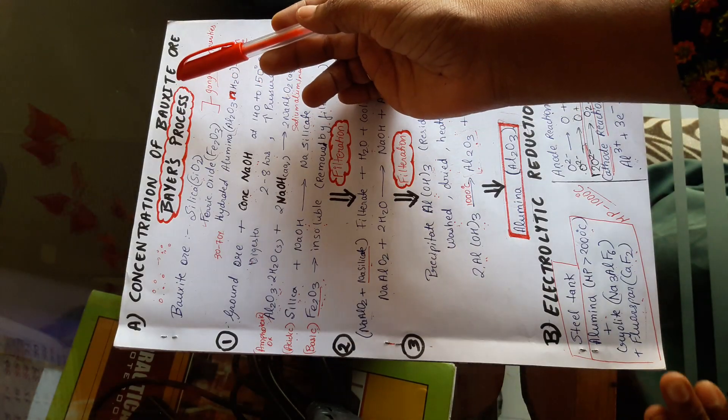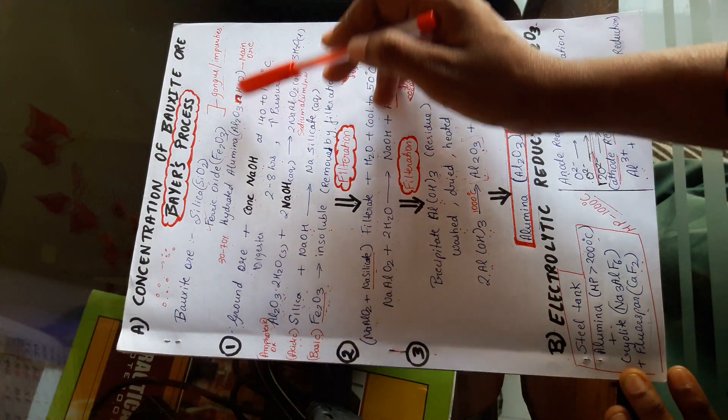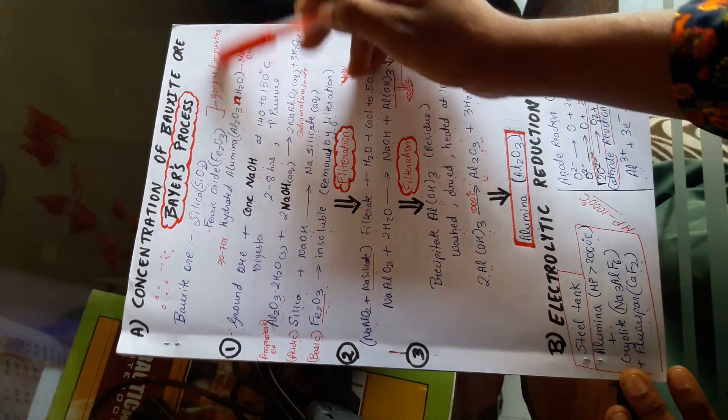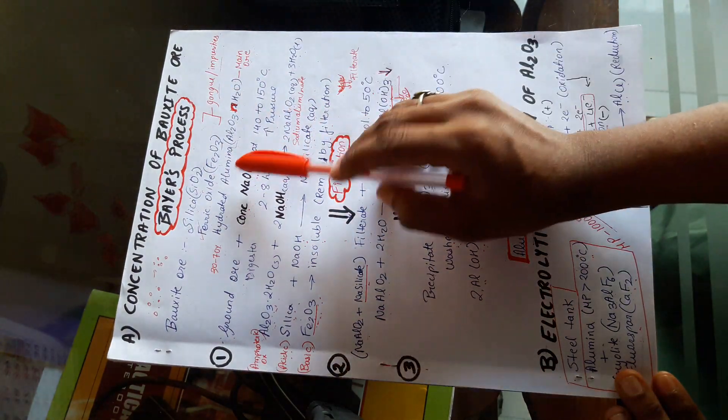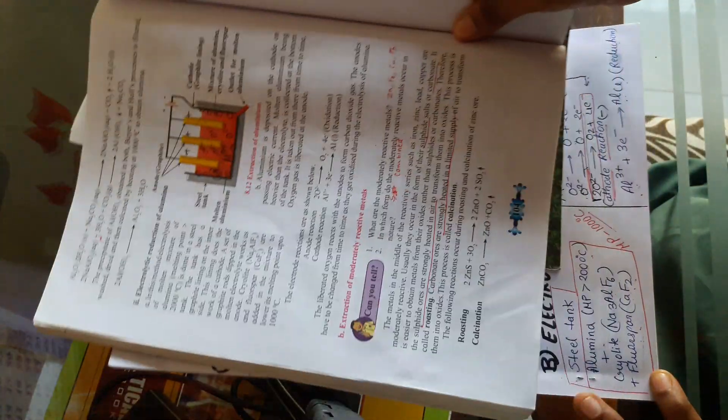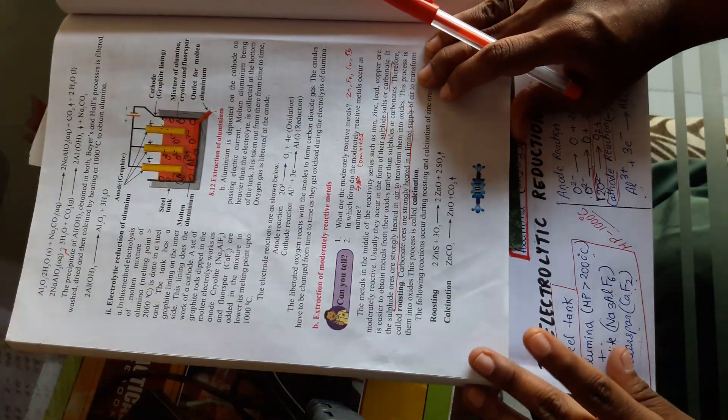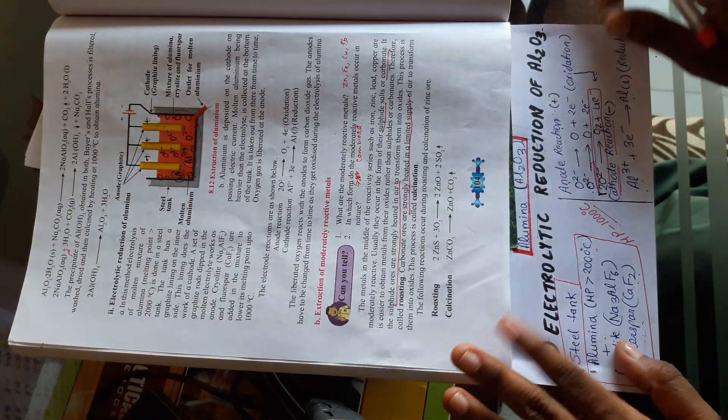In Bayer's process as well as Hall's process, from bauxite ore, gang particles or impurities were removed. What is alumina? Alumina, that is aluminium oxide (Al₂O₃), has to be broken down to get aluminium. How is it done? Let us see.